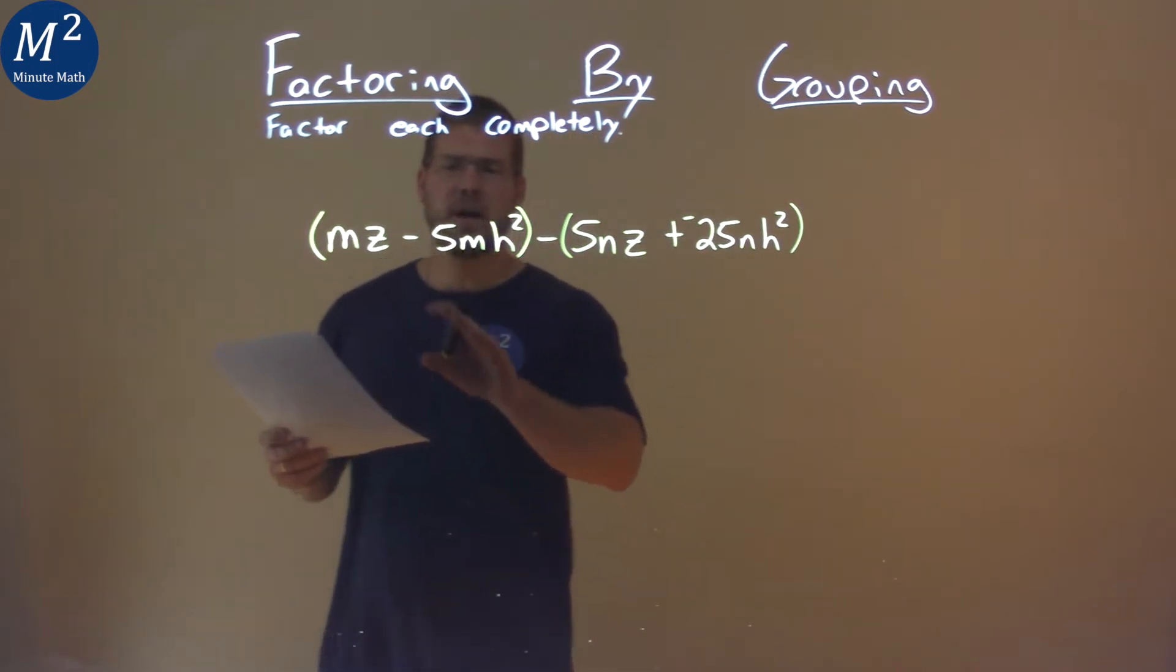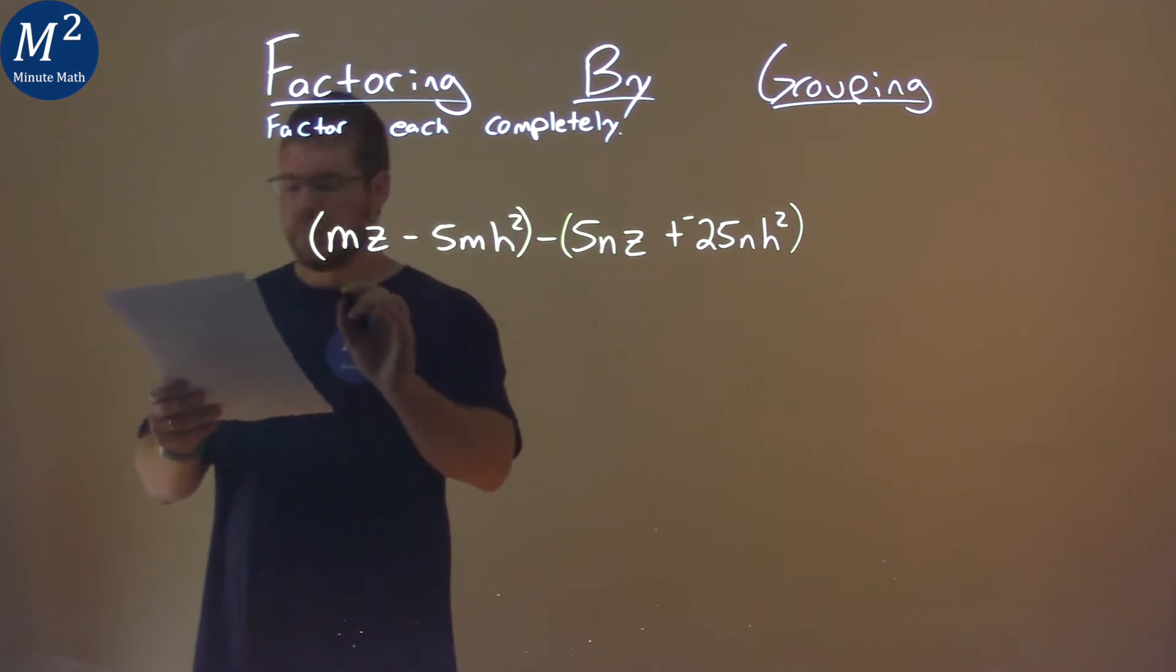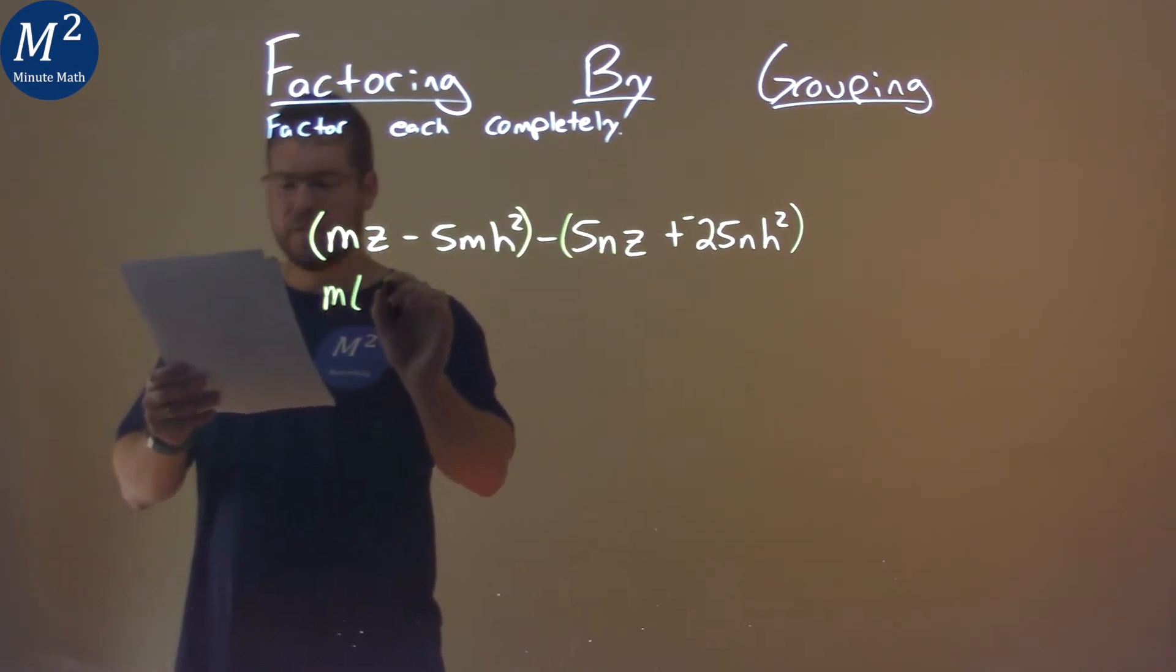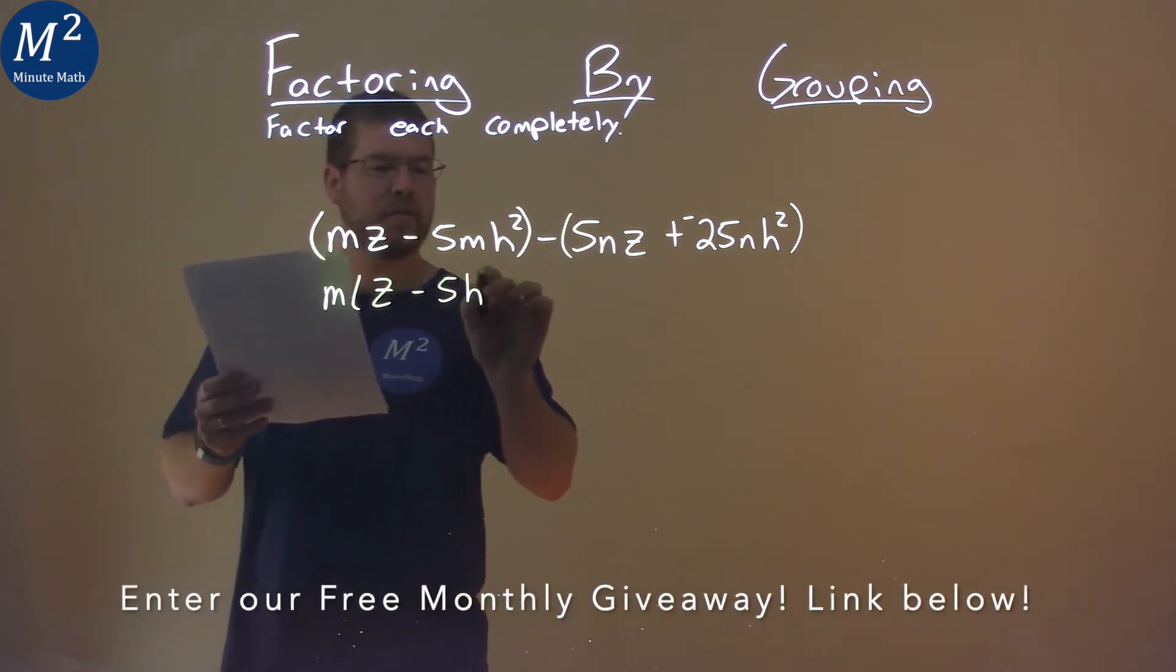Now, let's go find a common term in the first parentheses. An m is in both parts. So, we pull out an m, and I'm left with a z minus 5h squared.